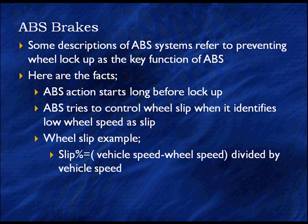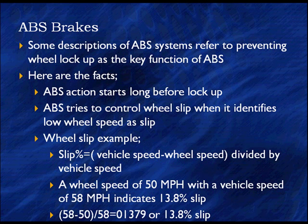Here's an example. The percentage of slip is calculated by subtracting wheel speed from vehicle speed and dividing that by vehicle speed. The equation: vehicle speed minus wheel speed divided by vehicle speed. We're looking at a wheel speed of 50 miles an hour when the average of the other three sensors indicates 58. So the result is 13.9% wheel slip — that's 58 minus 50 divided by 58.